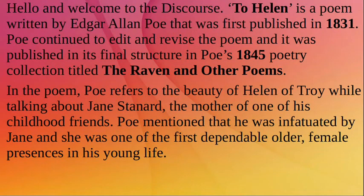To Helen is a poem written by Edgar Allan Poe that was first published in 1831. Poe continued to edit and revise the poem, and it was published in its final structure in Poe's 1845 poetry collection titled The Raven and Other Poems. In the poem, Poe refers to the beauty of Helen of Troy while talking about Jane Stanard, the mother of one of his childhood friends.